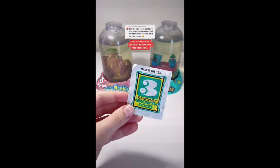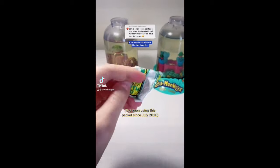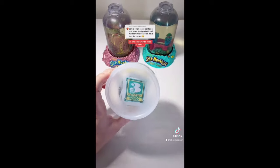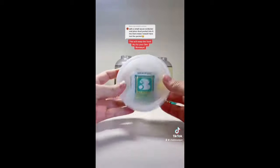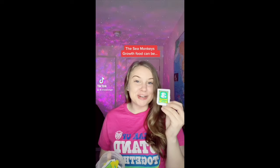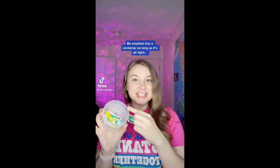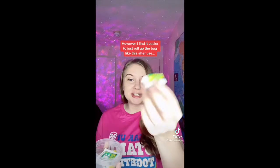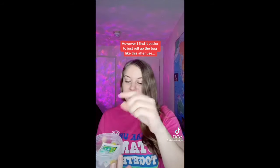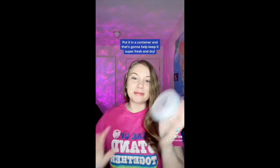This is what a new packet of sea monkey food looks like. After a while it will look like this though. So the best way to keep it fresh is to find a small airtight container to store it in. This will keep the food dry for your sea monkeys. The sea monkeys grow food can be emptied into a container as long as it's airtight. However, I find it easier just to roll up the bag like this after use. Put it in a container and that's going to help keep it super fresh.